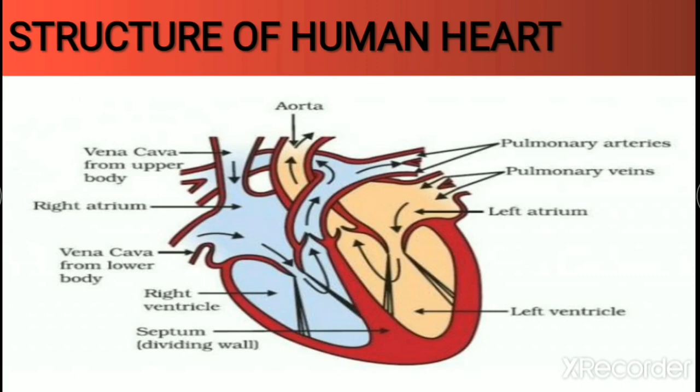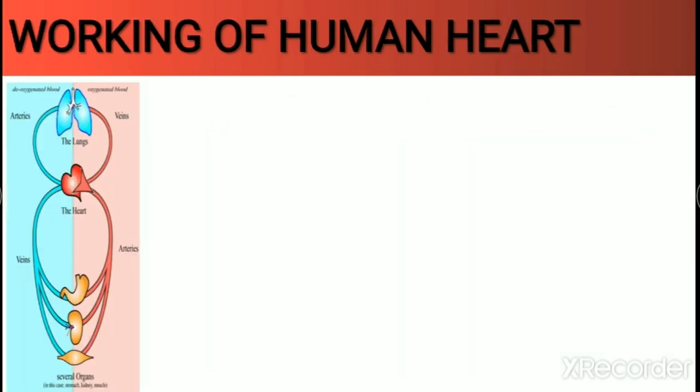In addition, the coronary artery and coronary veins are present around the heart. Their main function is to supply blood to the heart itself and collect its deoxygenated blood. So these are the four main vessels connected to the four main chambers.